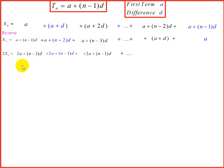So our answer can be rewritten as 2S_n is equal to n times 2a plus n minus 1d, where n represents the number of terms.